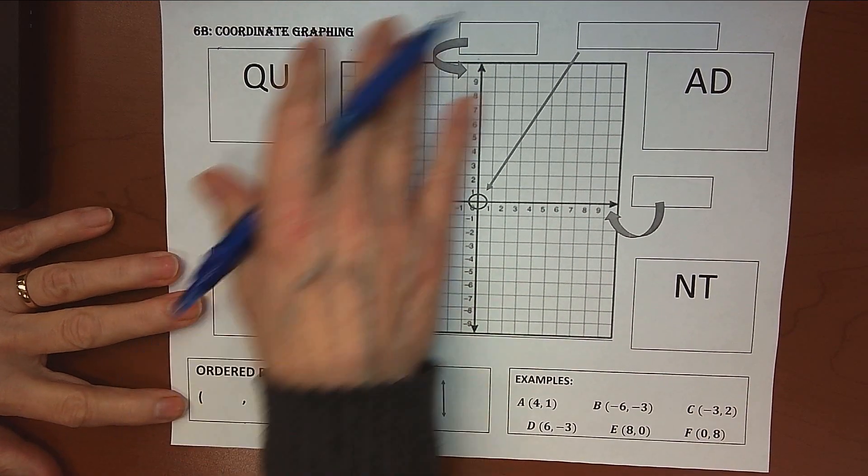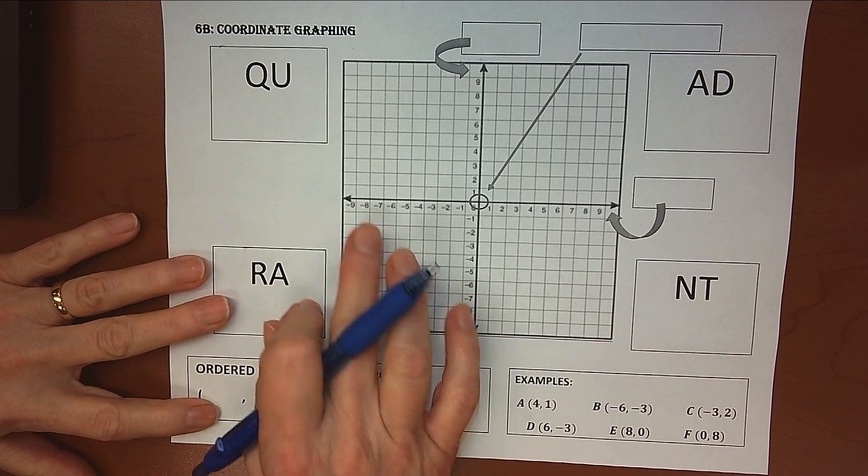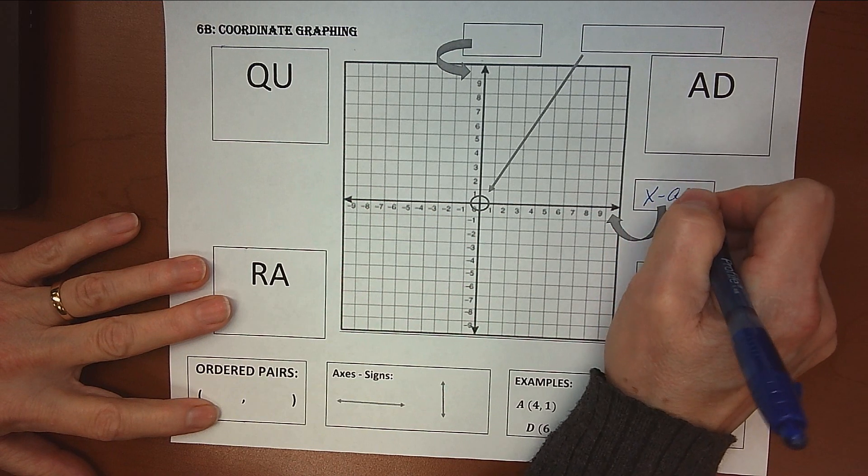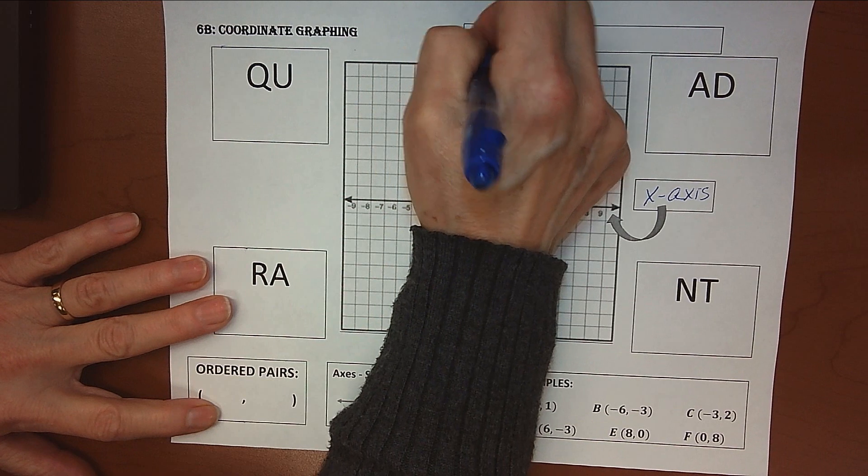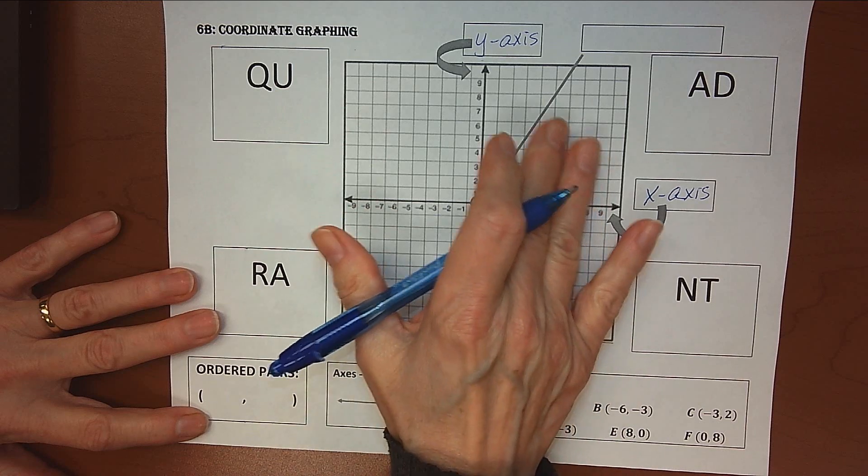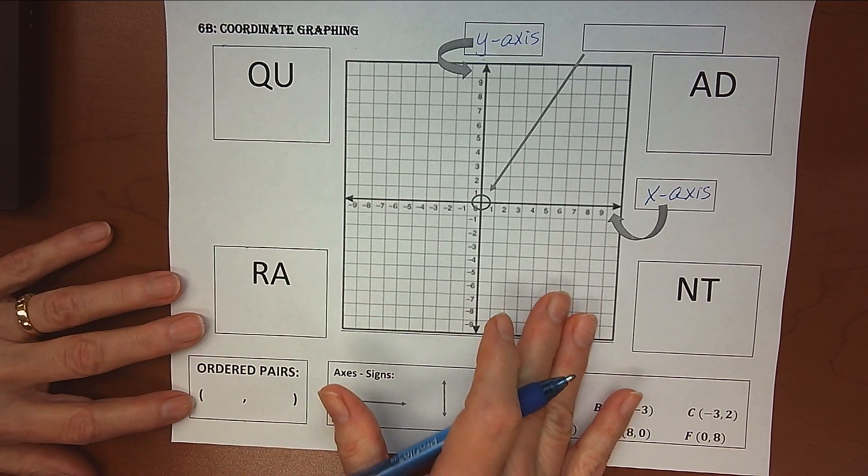First of all, remember that this is called a coordinate grid, or coordinate graphing. And we have our x-axis and our intersecting y-axis. The intersection of those two axes divide this into four quadrants. Quad meaning four, so four quadrants.